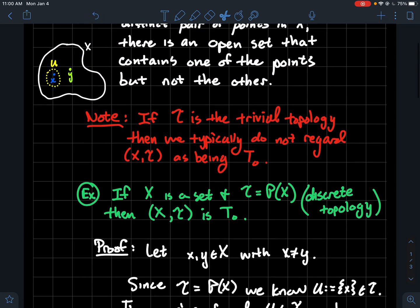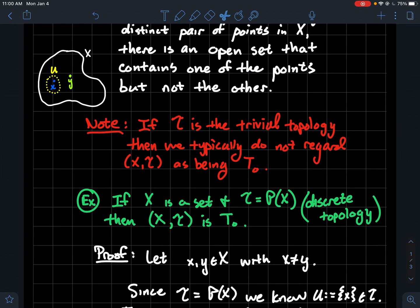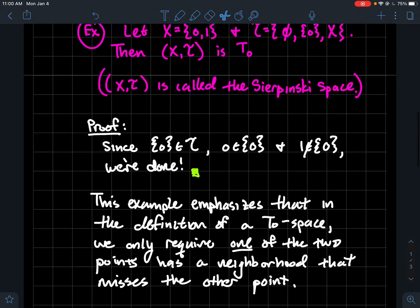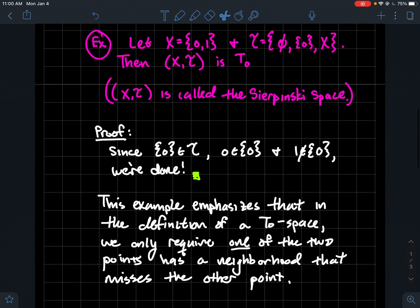In other words, if I look at my picture up here, I don't necessarily require that y has a neighborhood that misses x.